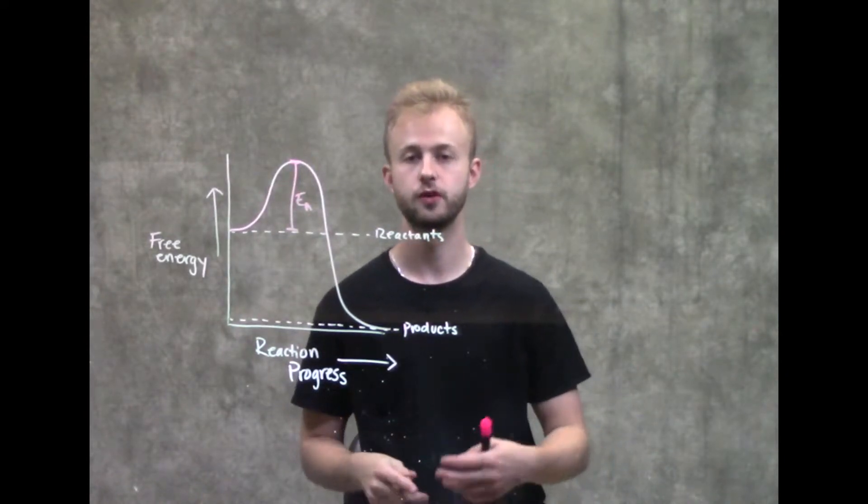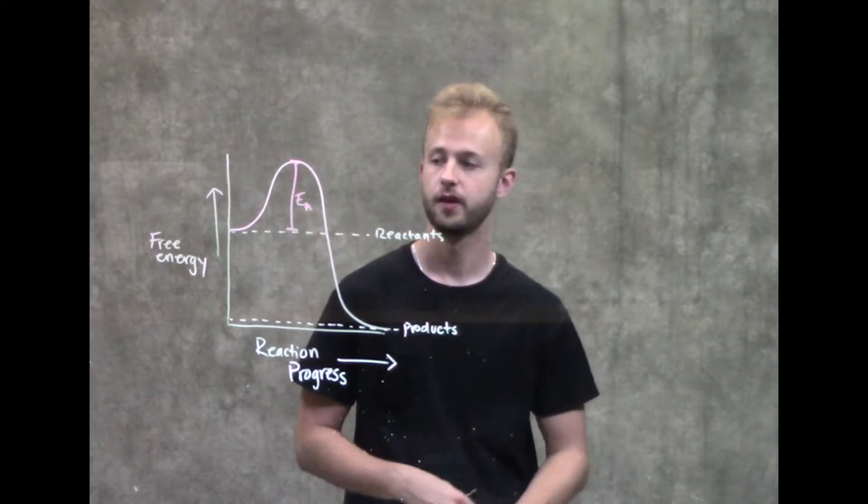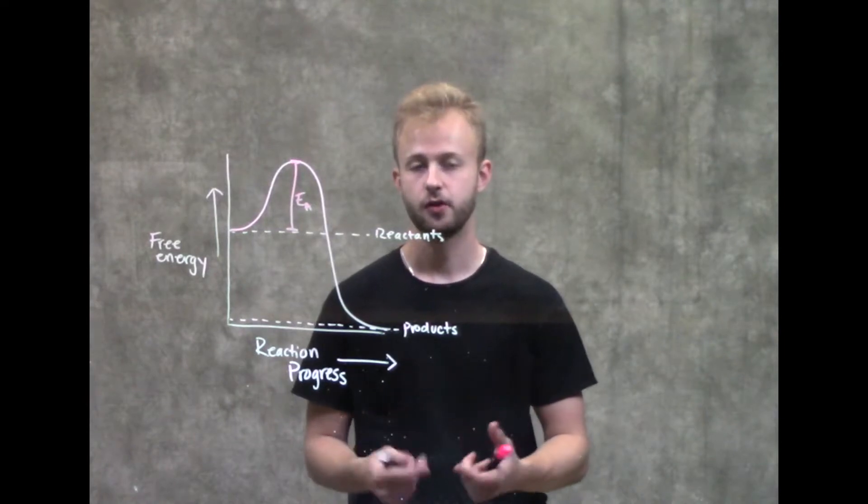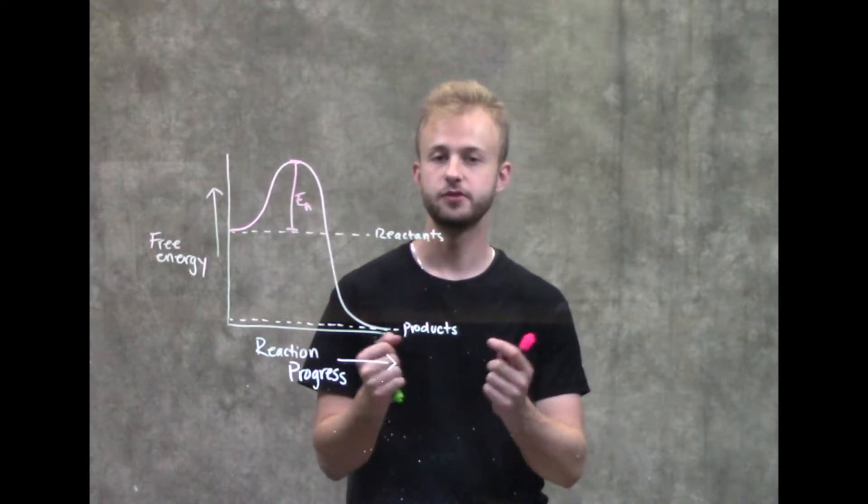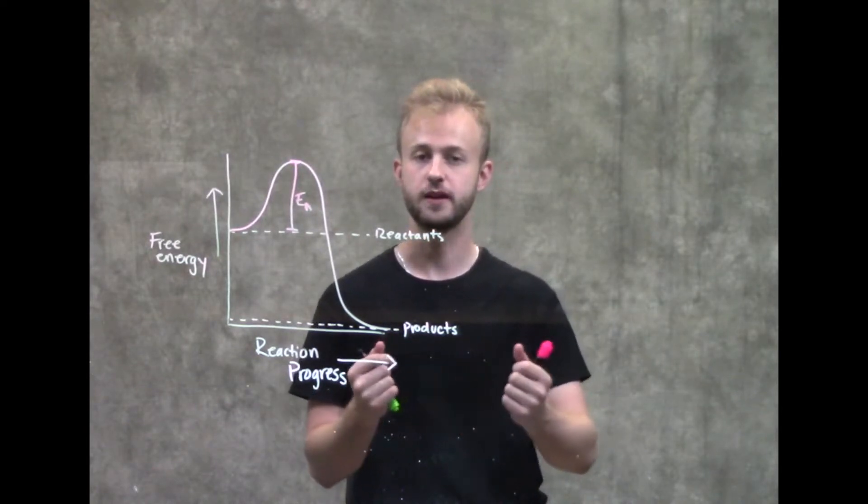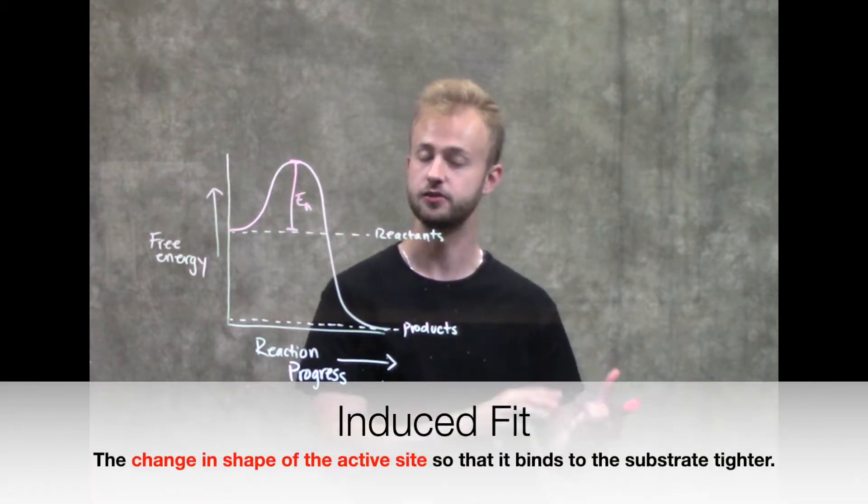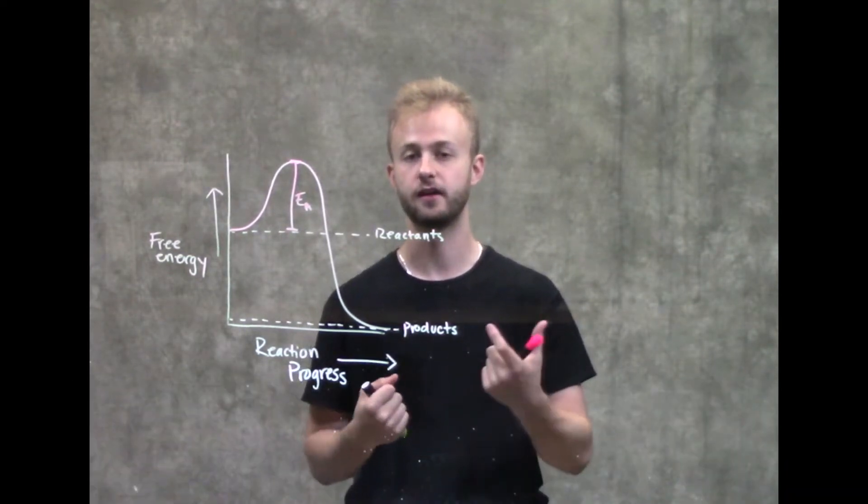The way it does that is through using its active site in a model called the induced fit model. Your substrate will bind to your enzyme on the active site, which is where this reaction actually takes place. When it binds, the enzyme is going to change its shape to make it fit more tightly around that substrate. That's the induced fit model, saying that the active site will change shape to make that fit better.